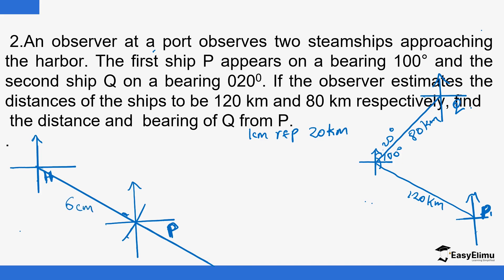So using H as the center and the radius of six centimeters, draw an arc. So this is where P is. So the distance here is six centimeters, but on the actual ground, that is 120 kilometers. Then again, you measure 20 degrees for 20 degrees. So that's where 20 degrees is.